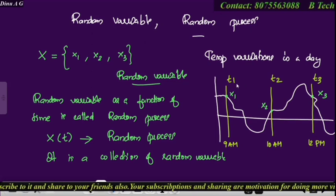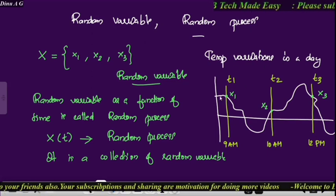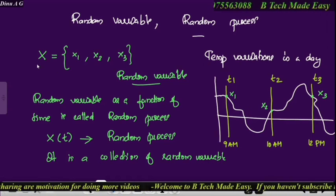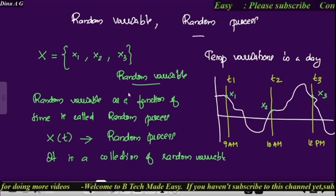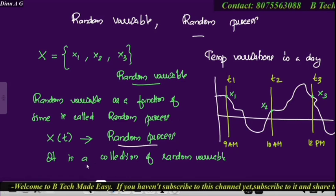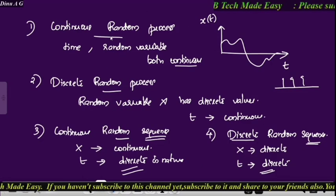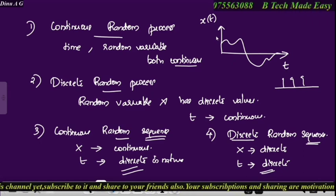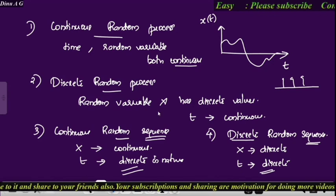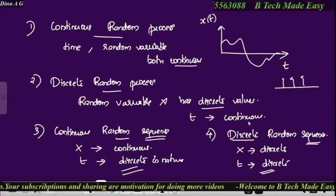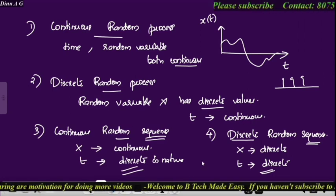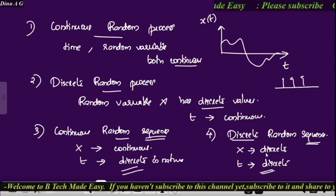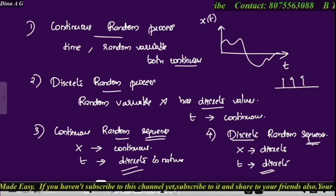There are two key concepts: random variable and random process. A random variable example is temperature variation in a day — at different time instances there are corresponding temperatures x1, x2, x3, which are random variables. A random variable as a function of time corresponds to a random process, which is a collection of random variables. There are four classifications: first, continuous random process where both t and the random variable are continuous; second, discrete random process where the random variable x has discrete values; third, continuous random sequence where the time axis is discrete and the random variable is continuous; fourth, discrete random sequence where the random variable is also discrete.